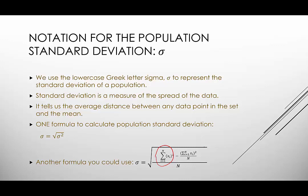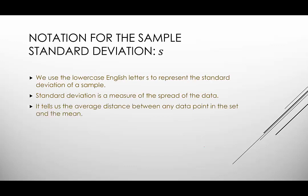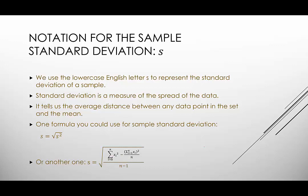And the notation for sample standard deviation would just be lowercase letter s that measures the spread of the data, tells us the average distance between any data point in the set and the mean. One formula, if you calculate the variance just take the square root of the variance. Alternatively you could use this formula here where you add up the squares of each data point, subtract it by the data points summed and squared divided by the number in the sample and then all of that divided by the sample minus one. And again that's just to account for the extra error.